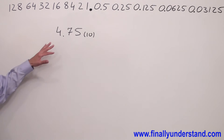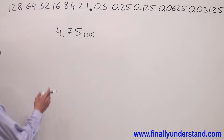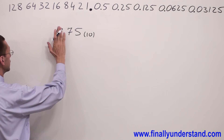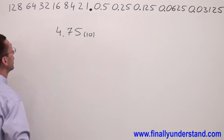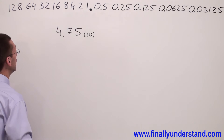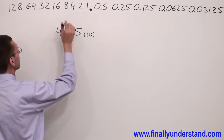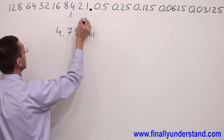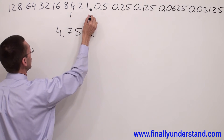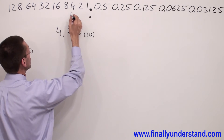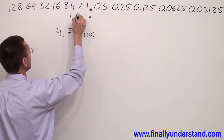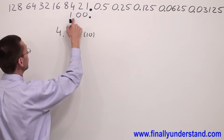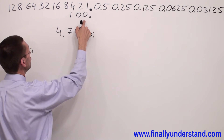4.75. Again, we're supposed to convert first the whole part and after that the fractional part. 4 — that's why I'm going to write 1, and this is my binary point. So I have to fill up these two spaces by 0s. This is my binary 4.